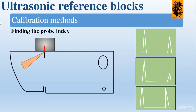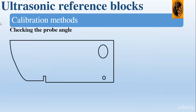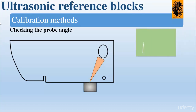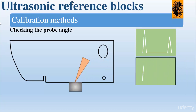Now let's see how we can check the angle of the probe for 45 and 60 degrees. We place the probe on the V1 block approximately adjacent to where the appropriate angle is inscribed and direct it at the plastic insert. As seen in the animation, we obtain the signal from the plastic insert and maximize it by moving the probe backward and forward. We find the position where the probe index coincides with the angle indicated on the side of the V1 block — this will be the angle of the probe.